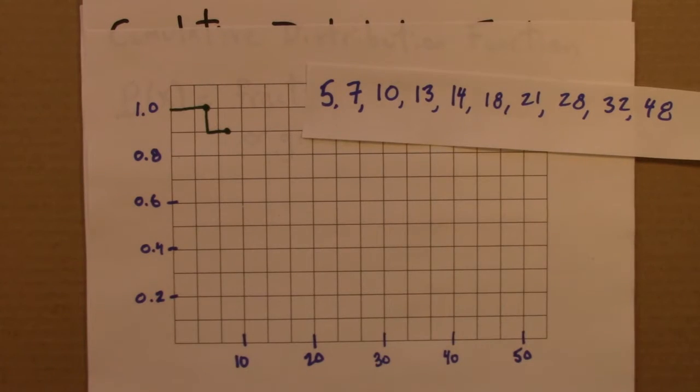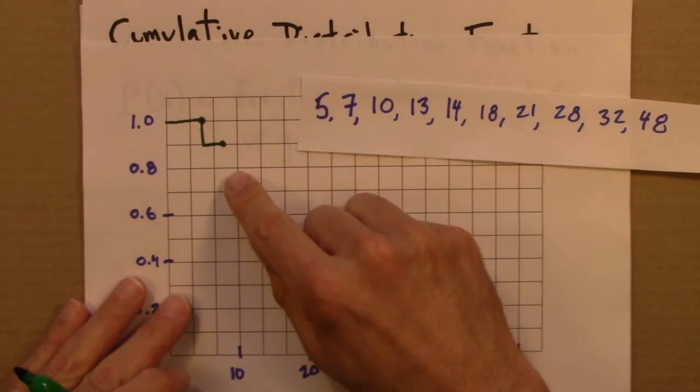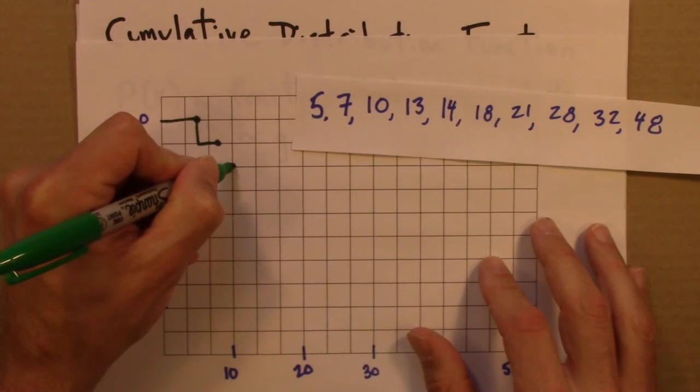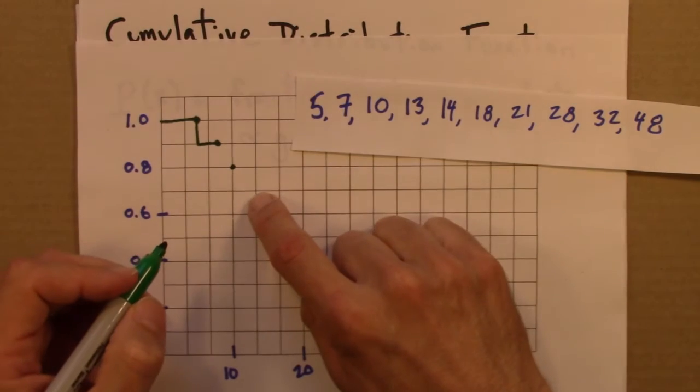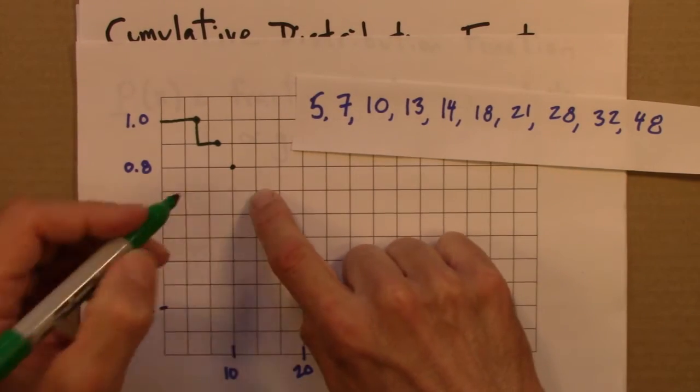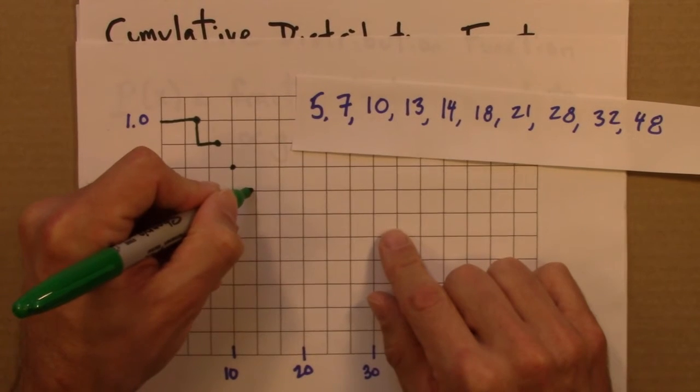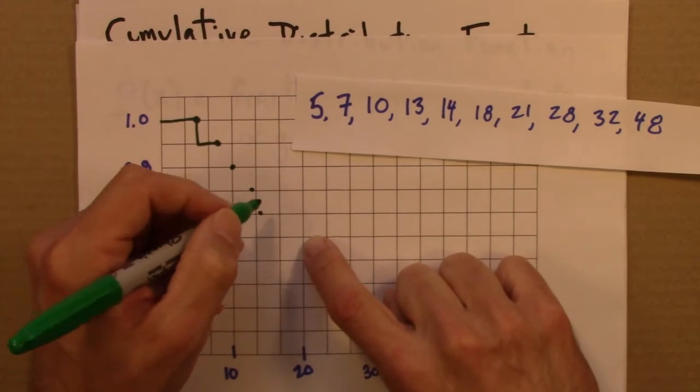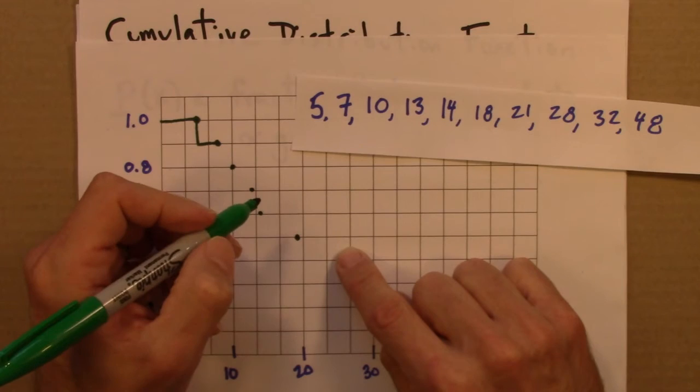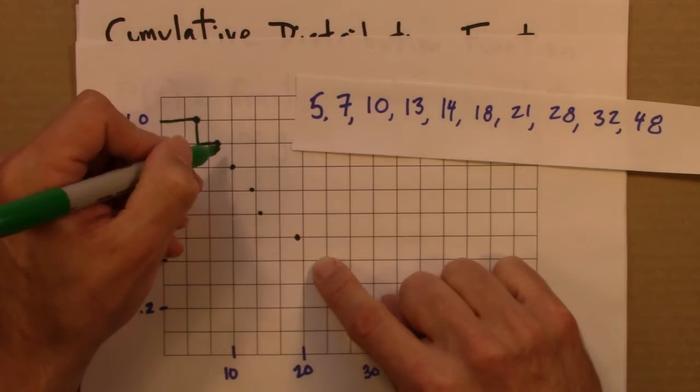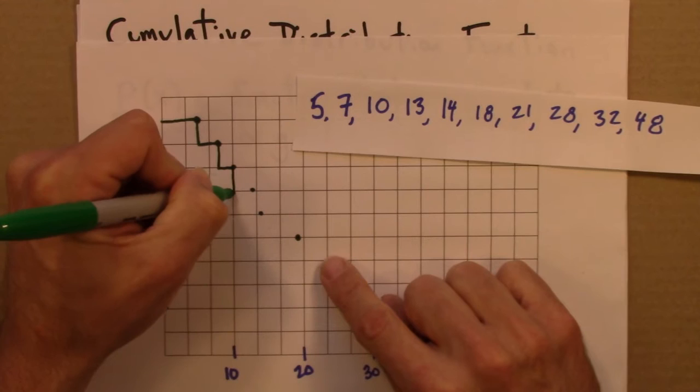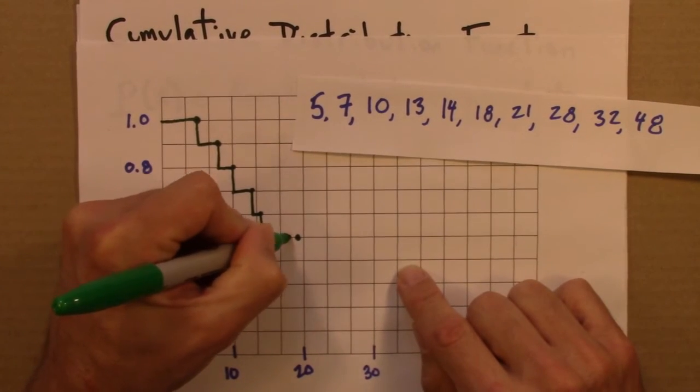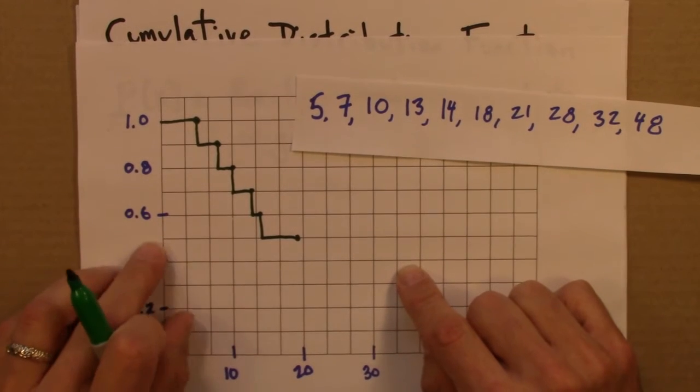Alright, so next is 10. And you can see what's happening. I'm just going to step down by one increment each time. So there's 10, then 13, be right around there, then 14, and 18. Alright, stepping on down.